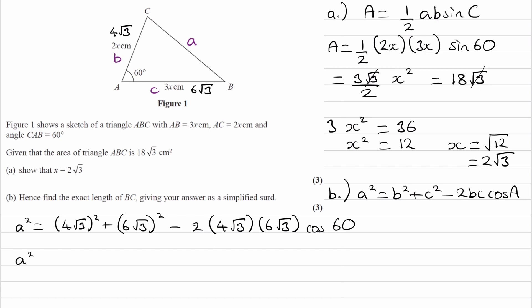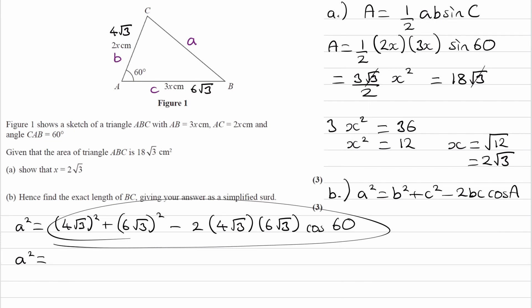So then a², if you type this whole thing in, would end up being 84. And if we square root both sides, we end up with a is equal to 2√21, which is our final answer for b.